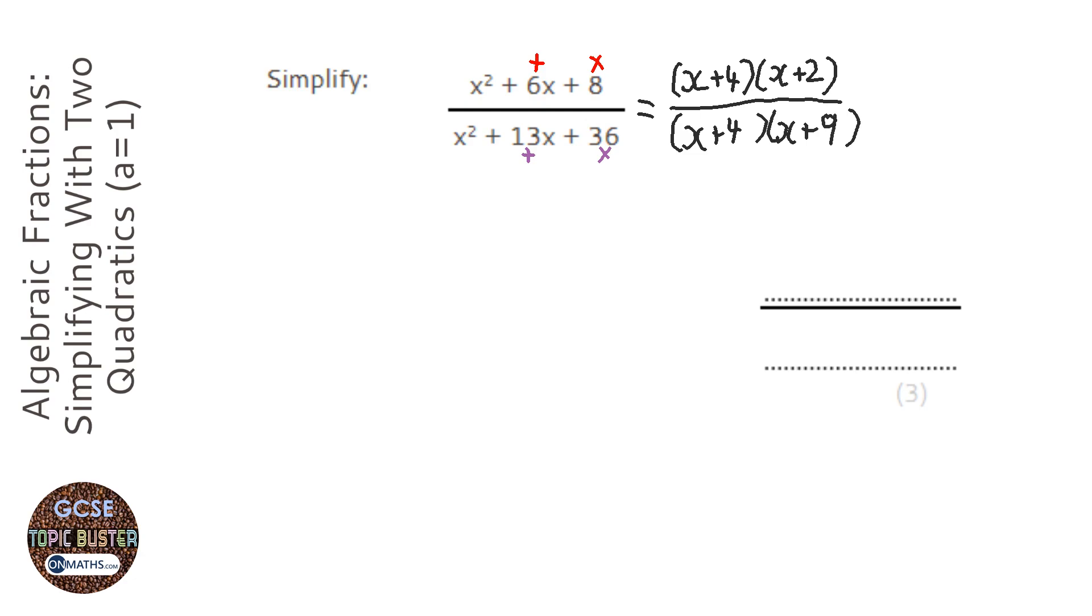OK, and with algebraic fractions, almost certainly you're going to be left with a bracket at the top and a bracket at the bottom at the same. We just divide top and bottom by that bracket. So, we're going to divide top and bottom by x plus 4. And that will leave x plus 2 at the top and x plus 9 at the bottom.